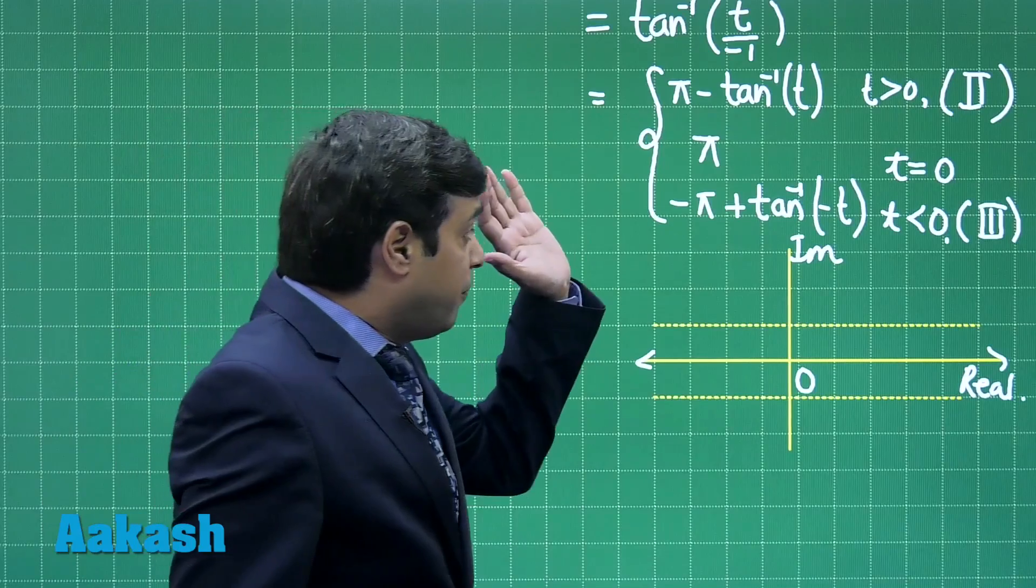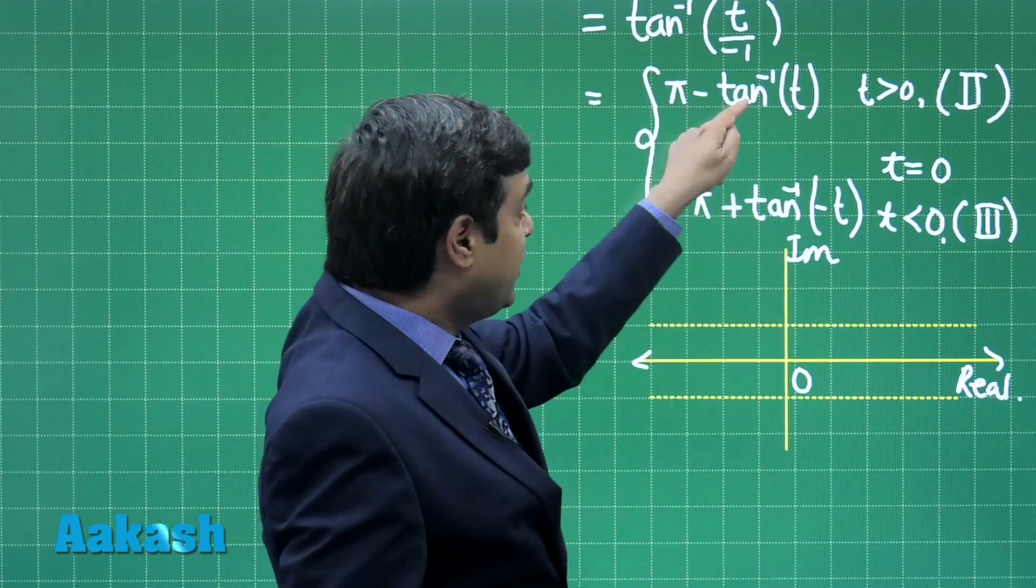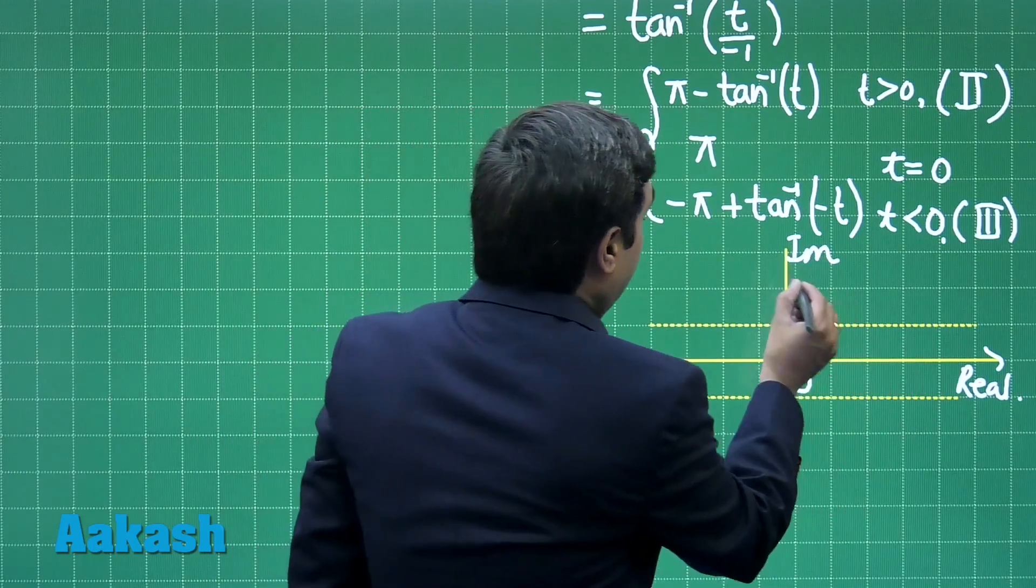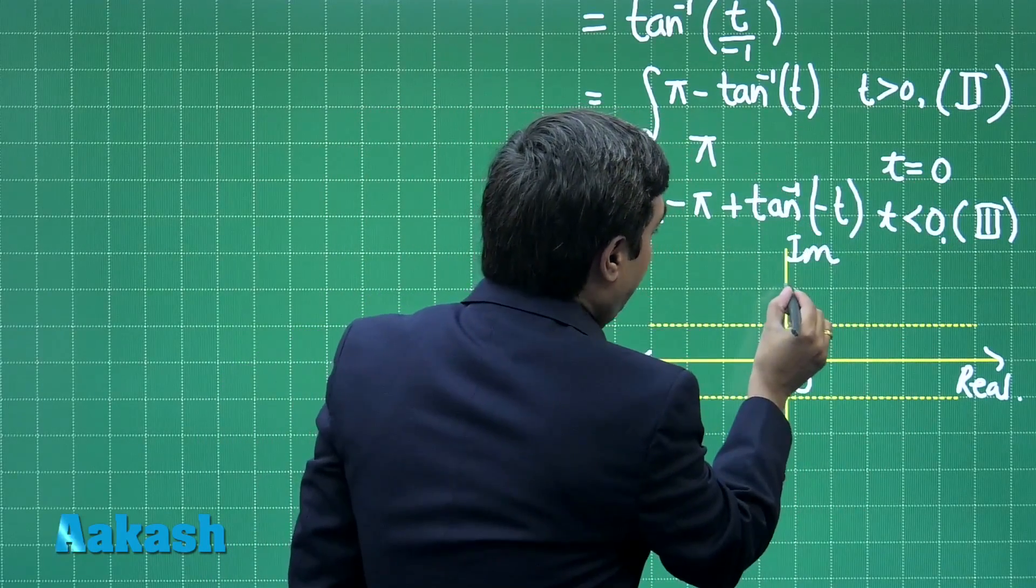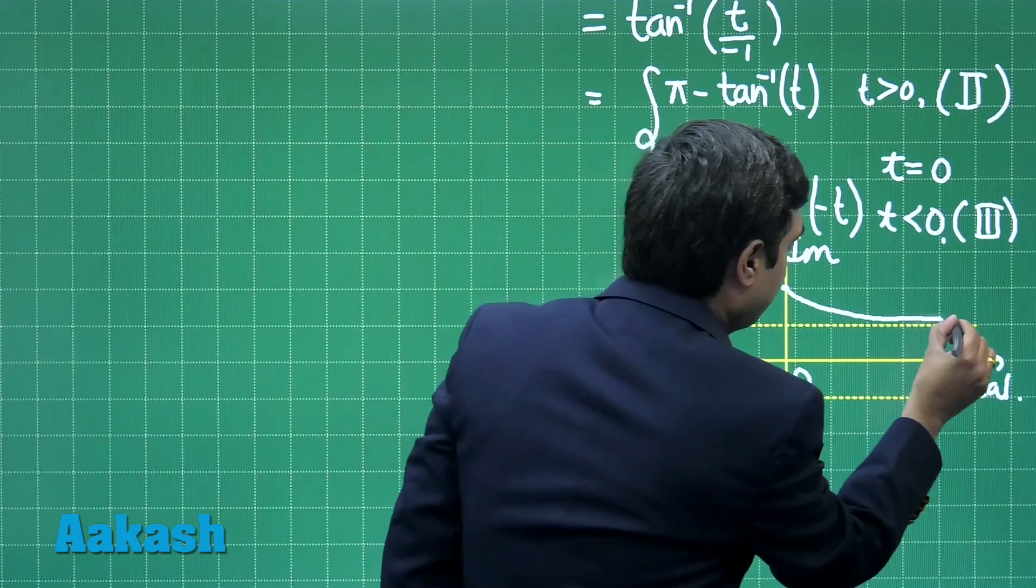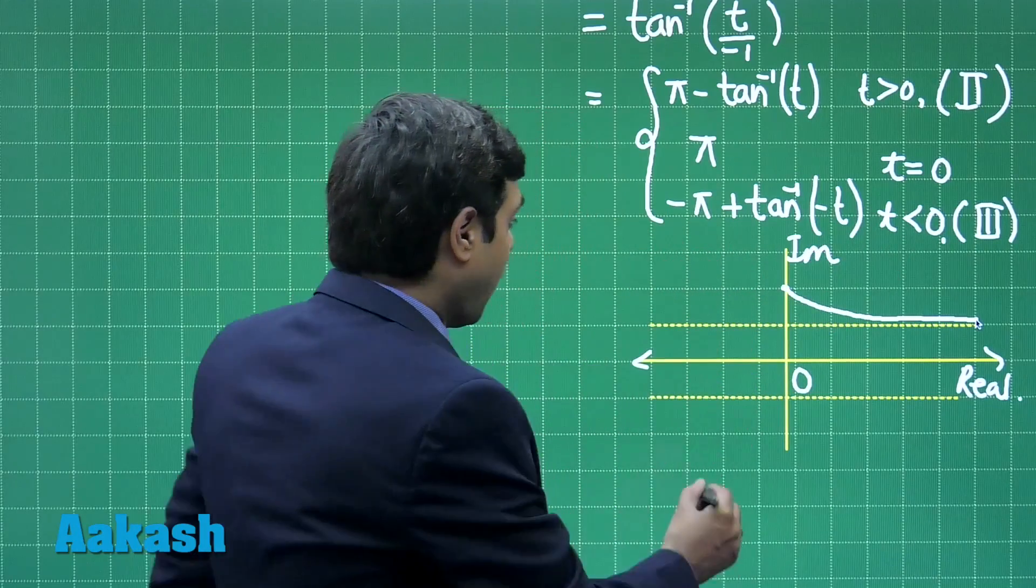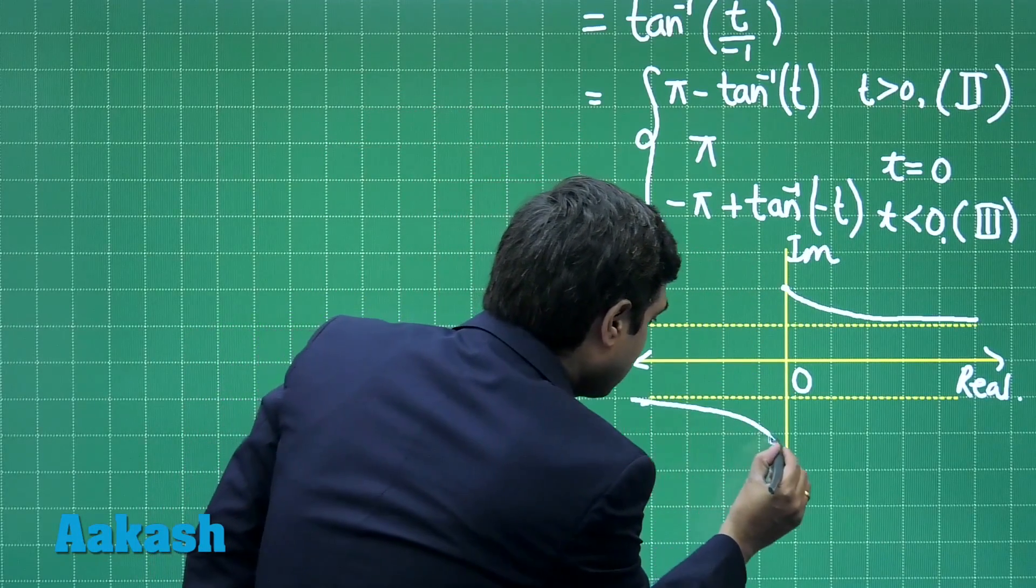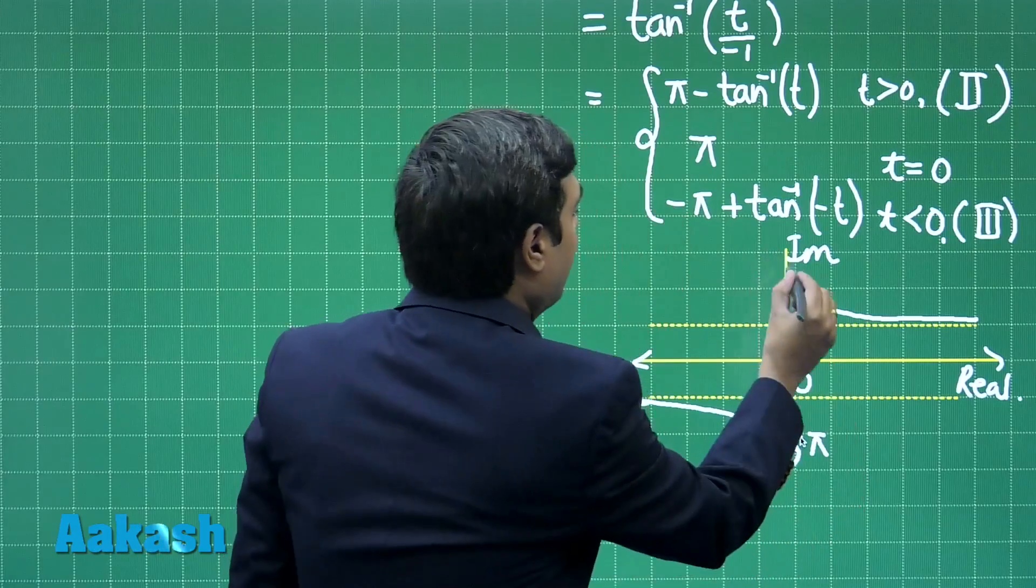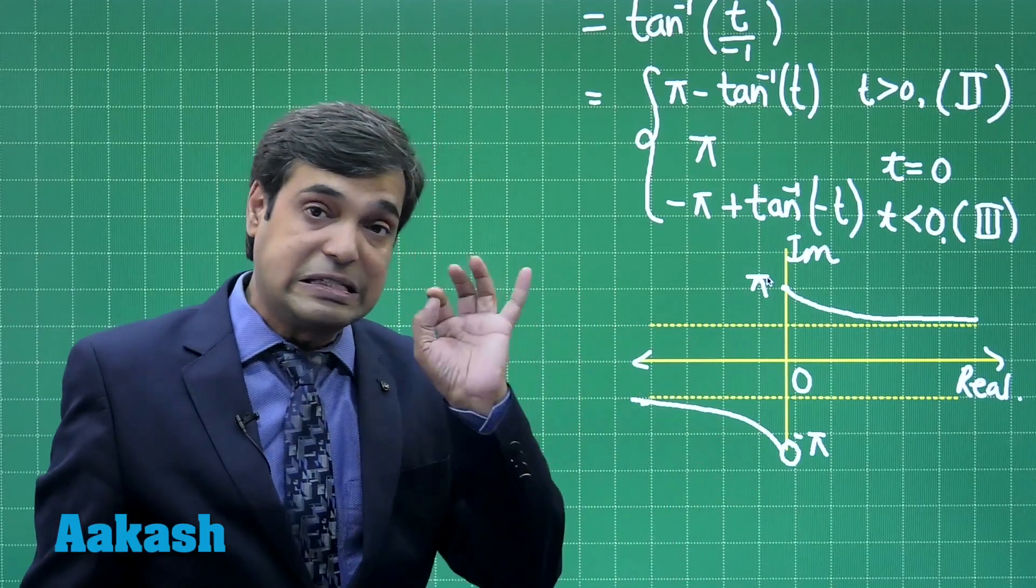When t is positive, it is pi minus tan inverse t. As t is approaching plus infinity, it becomes pi by 2, that is approaching to pi by 2. While at t equals 0 it is pi. Clearly we can see here the graph will go like this in this fashion. On the other side when t is negative, the graph goes in this fashion, and it is open here when it is minus pi. On the upper side it is plus pi.